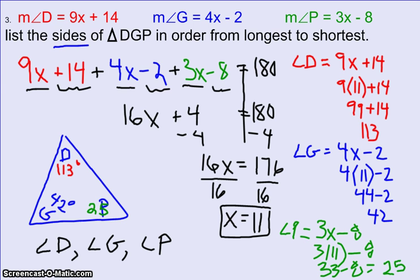So let's look here. You might think, I don't know anything about the sides. I just know something about the angles. But the truth is, you do. Remember, the largest angle, the side opposite will be the largest or the longest. The shortest angle, which in this case is P at 25 degrees, the side opposite that will be the shortest or the smallest. And then the angle that's in the middle, angle G at 42 degrees, the side opposite that will be the one in the middle.